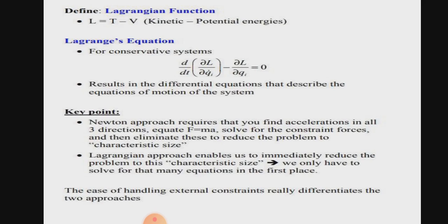Lagrangian: here is the equation for conservative system of Lagrangian equation. There is a point that why we use Lagrangian instead of Newton, because Newton approach requires that you find acceleration in all three directions, equate F equals ma, solve for the constraint forces, and then eliminate these to reduce the problem to characteristic size. But Lagrangian approach enables us to immediately reduce the problem to the characteristic size. We only have to solve therefore that many equations in the first place.